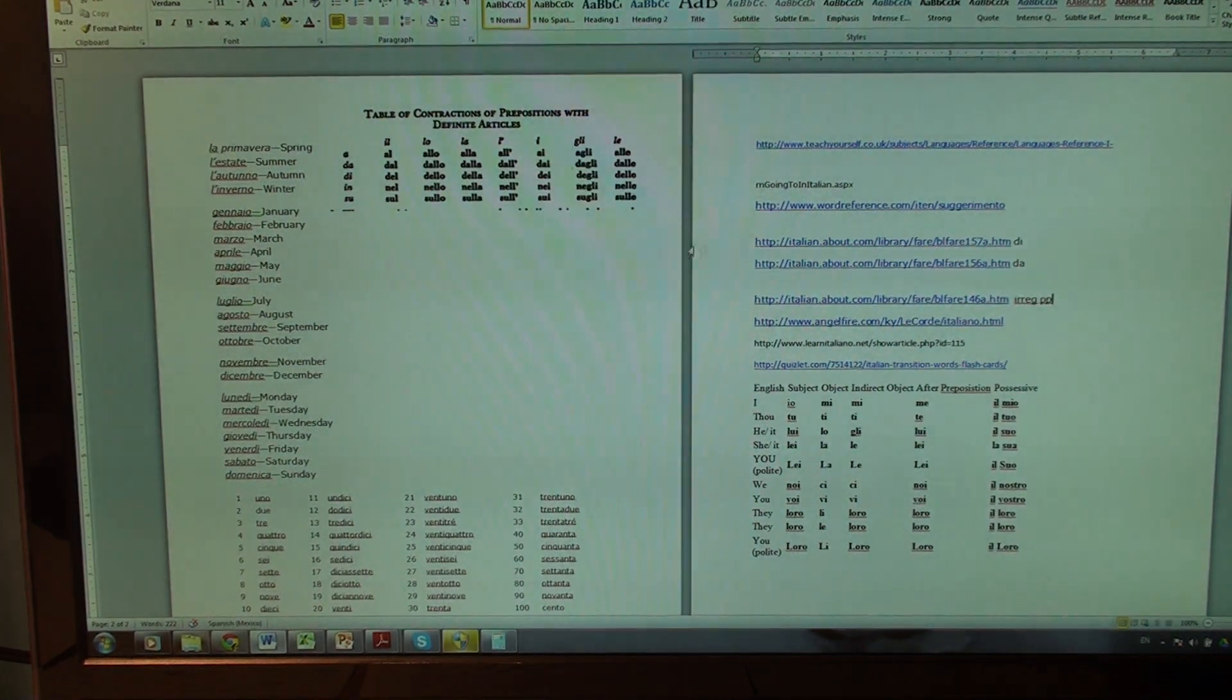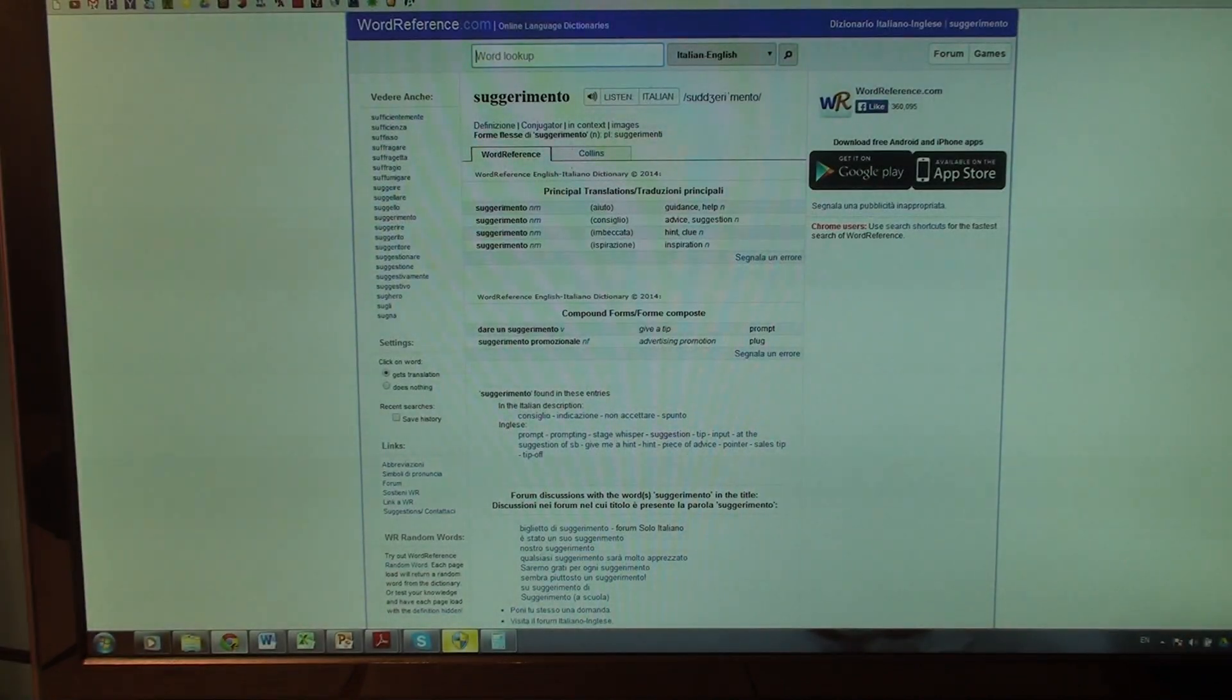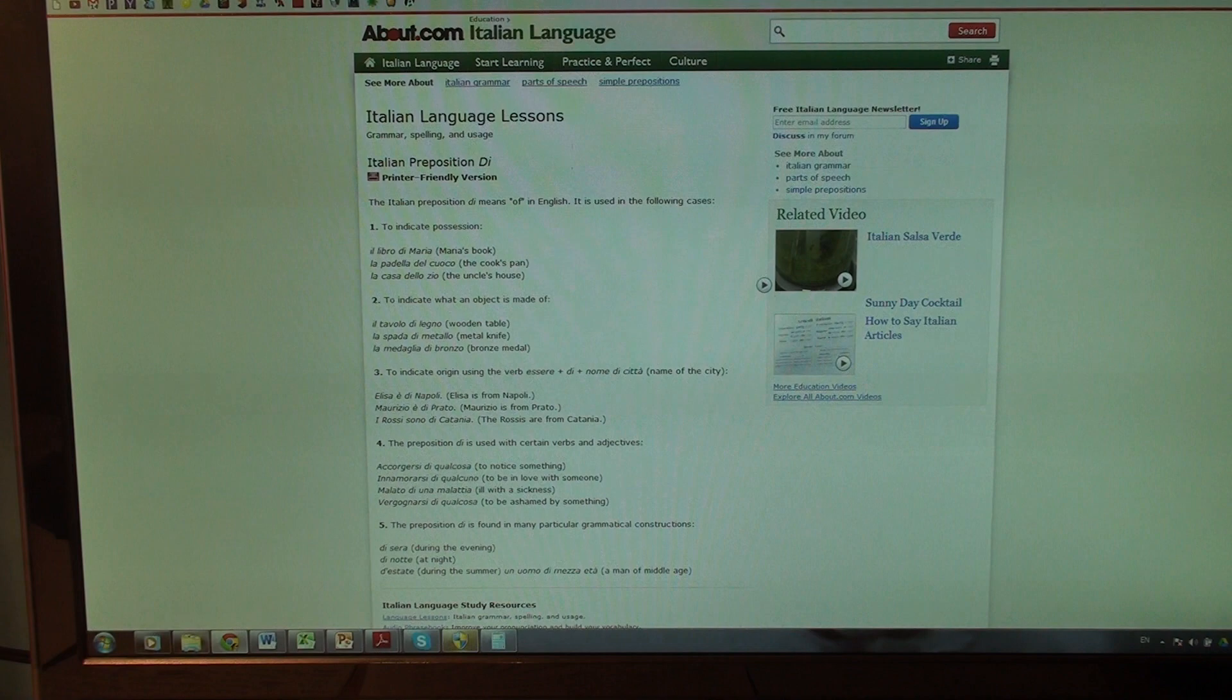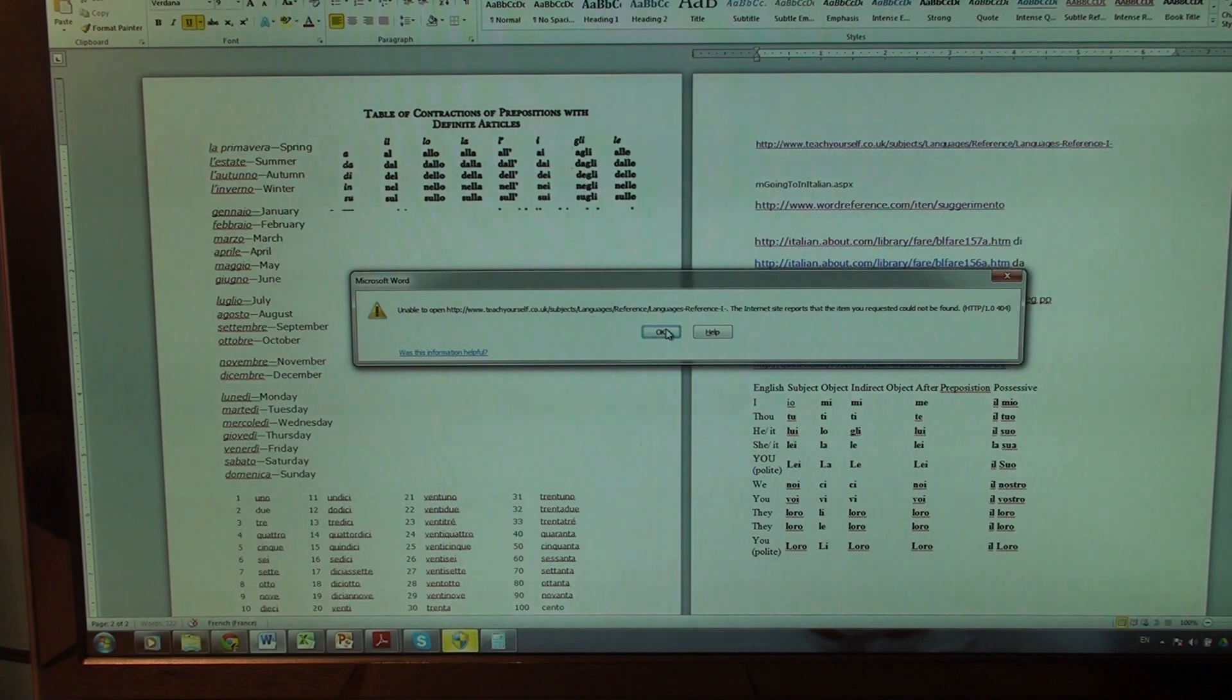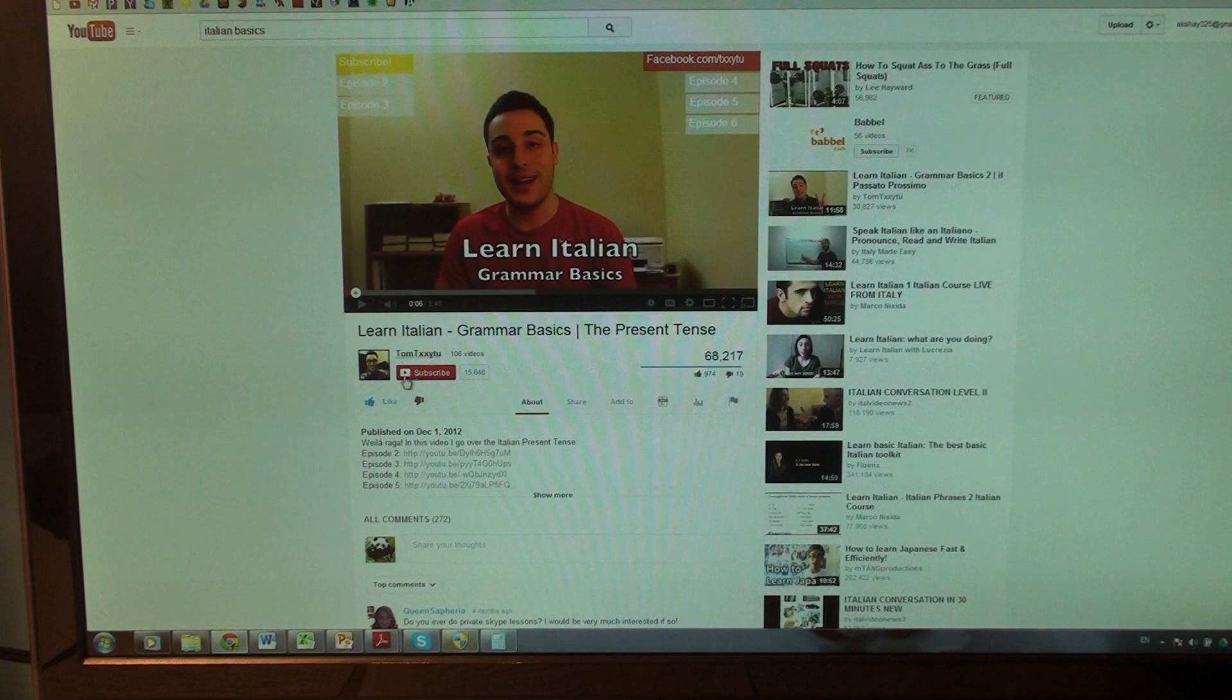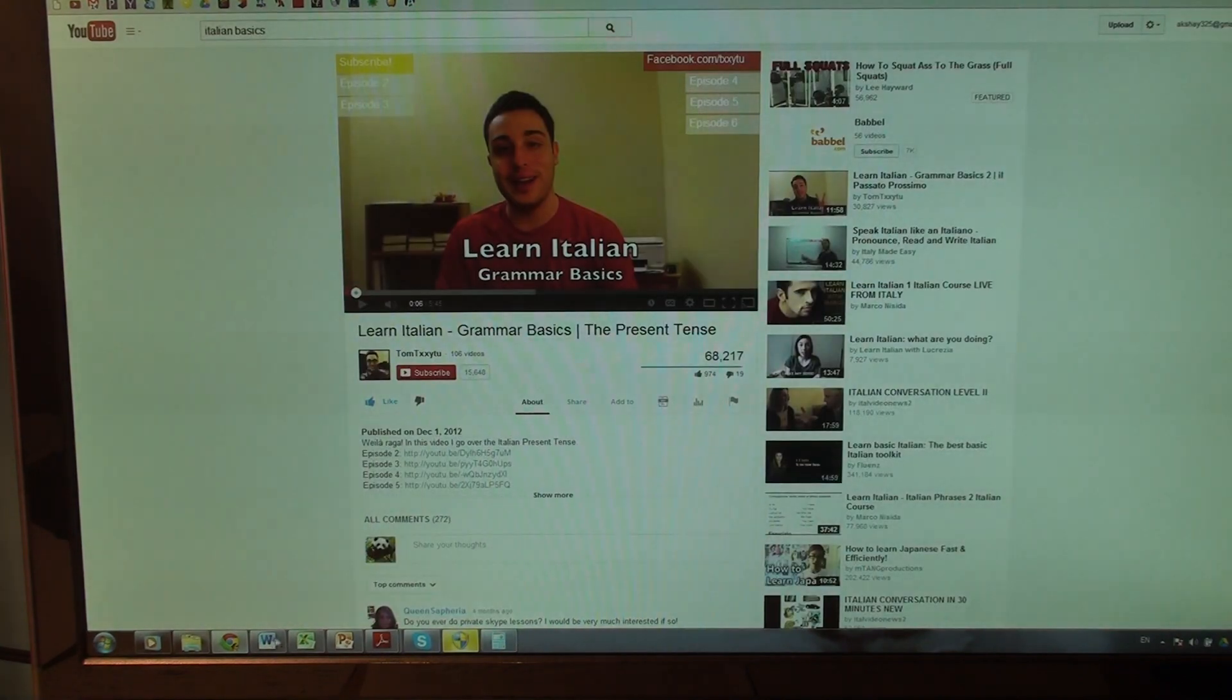In addition, I got from the internet, wordreference.com, which is my go-to dictionary. Highly recommended. Wonderful dictionary. Also, from the internet, about.com. Lots of useful grammar explanations. For verb conjugations, I also used about.com. Generally use that. So, mostly for grammar explanations and verb conjugations, I used the internet for.